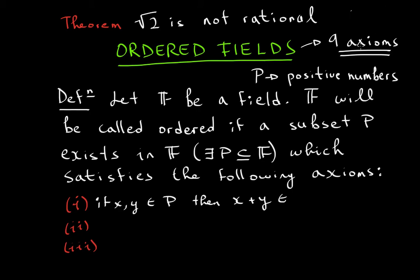So x plus y will be in the positives. Number two: if x and y are elements of the positive numbers, then if I were to multiply x with y, their product will be in the positives.